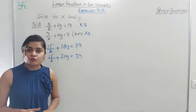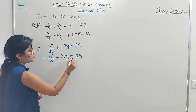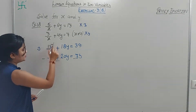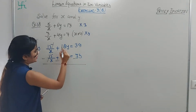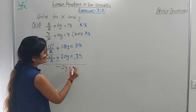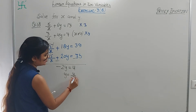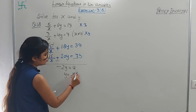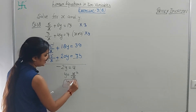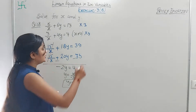Subtracting the equations: -2y = 4. So y = 4/(-2), that means y = -2. We easily found the value of y.